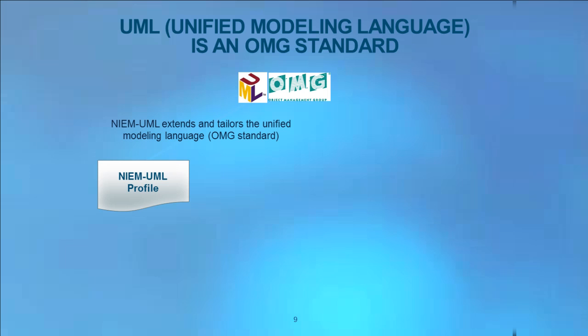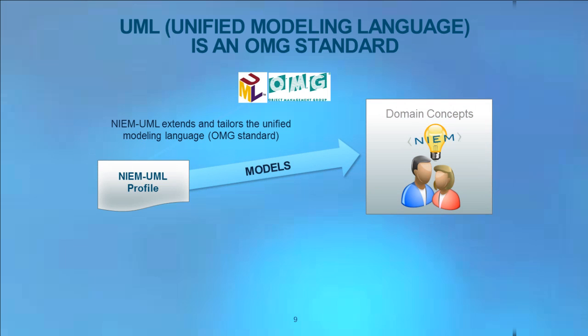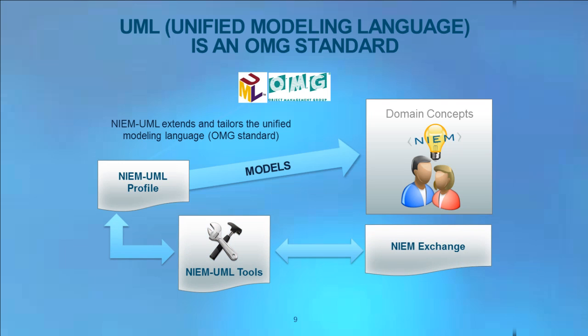UML, the Unified Modeling Language, is the OMG standard on which NIEM UML is based. Modeling for NIEM is defined using the built-in extension mechanisms of UML, called a UML profile. The NIEM UML profile extends and tailors UML to fully model NIEM information concepts as understood by stakeholders. The transforms define how tools produce NIEM technical specifications from UML models, as well as how to convert technical specifications into models, providing for round-trip engineering.